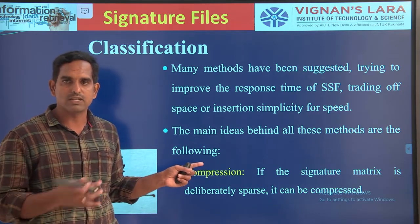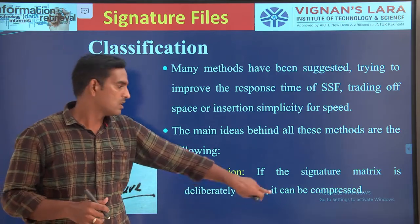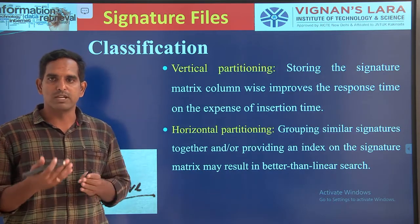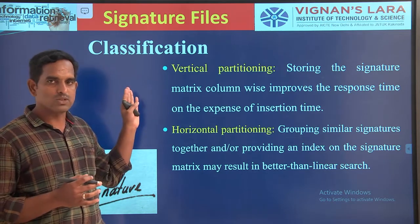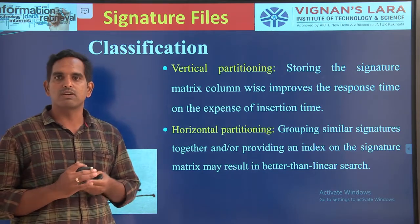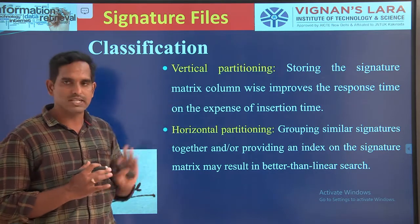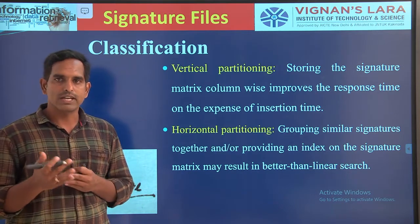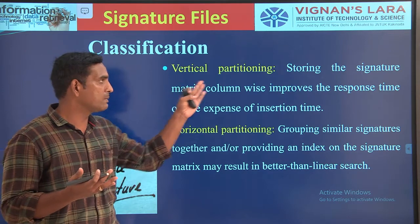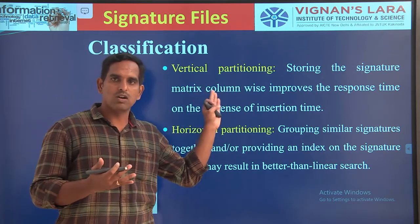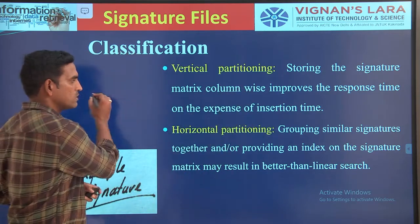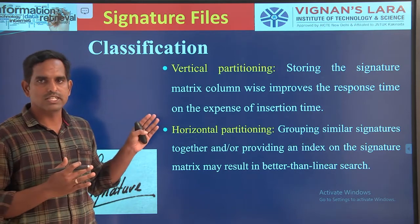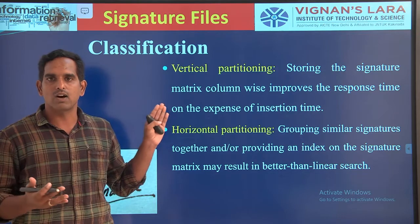Compression will be used whenever your signature file is in a sparse matrix form. We will look at compression later in this session. There are two other methods for defining our classification. The first one is vertical partitioning, where we will be storing our signature file in terms of column matrix order — similar to column-major order and row-major order. We will be storing the signature matrix in a column-major order.